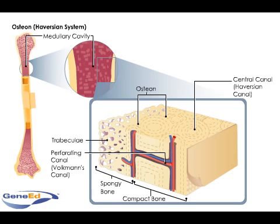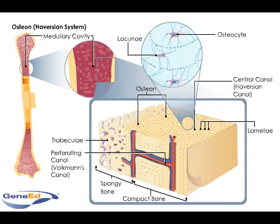The bony tissue's osteon surrounds a series of concentric lamellae, or layers, where lacunae, or osteocytes, fill in small gaps. Canaliculi, or small tunnels, connect lacunae to each other and the lacunae's inner ring to the central canal. Cellular processes in the canaliculi allow osteocytes to communicate with each other.